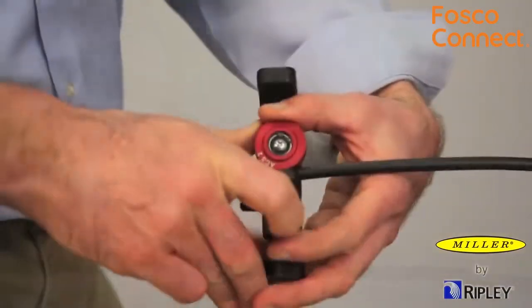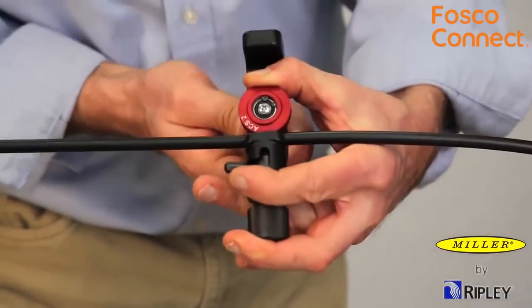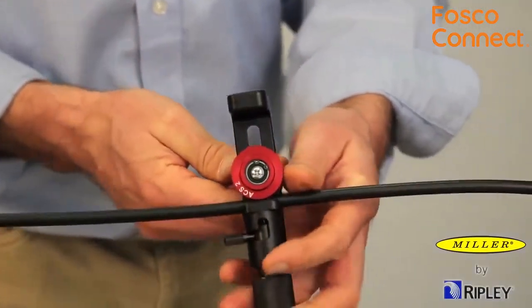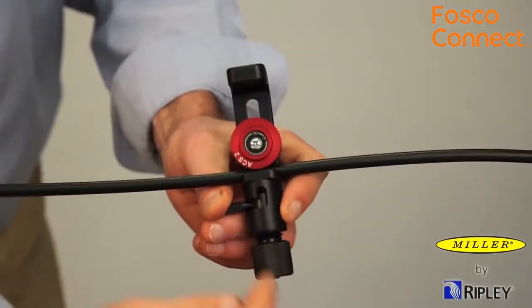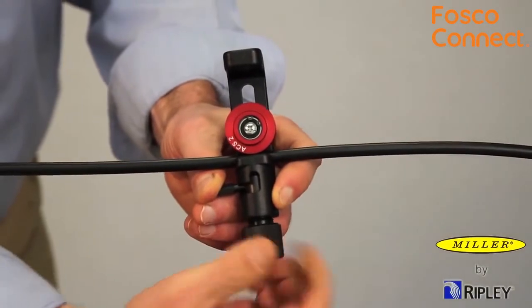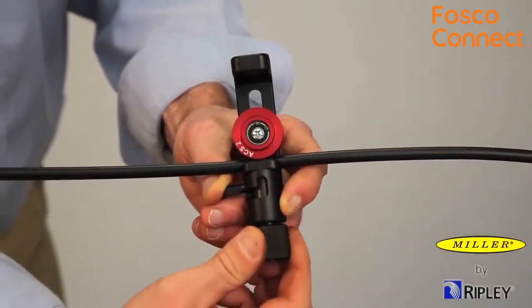Next, place the cable in the tool opening and adjust the roller with the yellow thumb knob for a snug fit. Then, tighten the black thumb knob down to position the blade for a longitudinal cut.